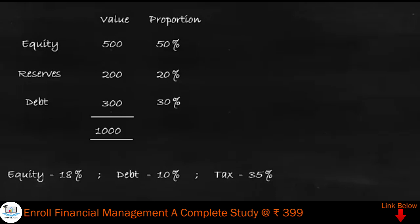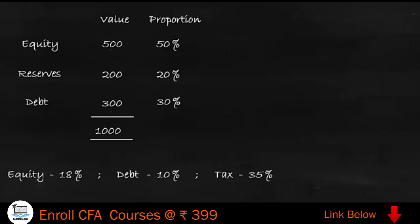Now that we have calculated proportion, we should take the after-tax cost. The cost for equity is dividend, and the cost for reserves is the dividend which was not declared — so the cost of equity is actually the same as the cost of reserves. Both are after-tax costs because dividend is paid on profits which is after tax. So the after-tax cost for equity is 18 percent and for reserves is also 18 percent.